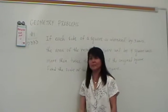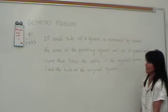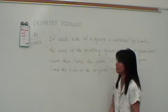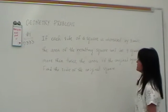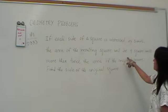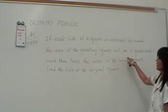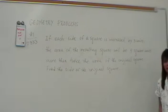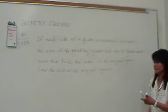A number of problems and do a geometry problem before we call it a day. So let's just look at the first example on the next section, 9.2. If each side of a square is increased by 3 units, the area of the resulting square will be 9 square units more than twice the area of the original square. Find the side of the original square.